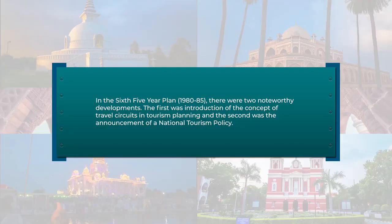Tourism was not included in the first five-year plan which was initiated in 1951. It was only from the second five-year plan that development of tourist facilities was taken up in a planned manner from 1956. Thereafter, systematic tourism development took place in India.